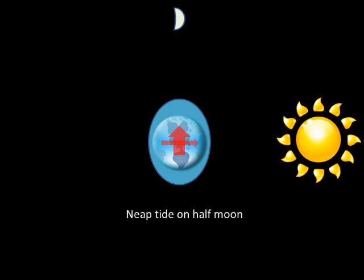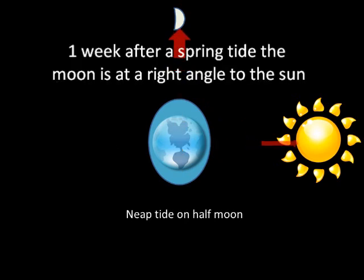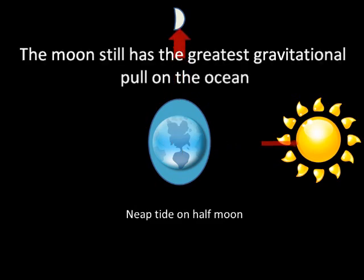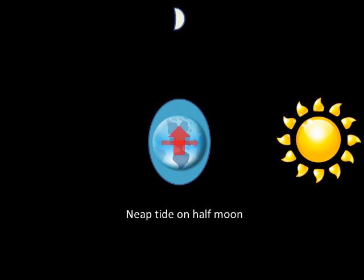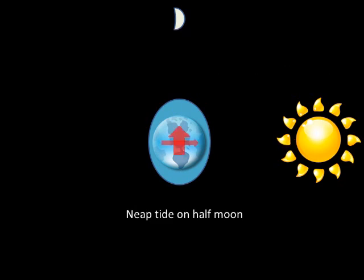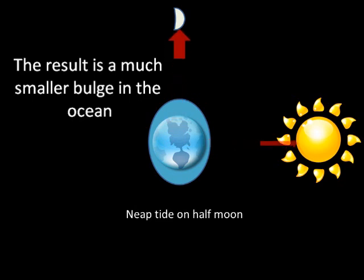One week after a spring tide we get a neap tide, when the moon is half lit and is at a right angle to the sun. The moon still has the greatest gravitational pull on the ocean; however, the sun is trying to pull in the opposite direction. The result is a high water bulge that is a lot smaller than we would get on a spring tide.